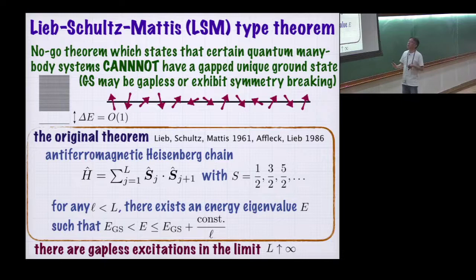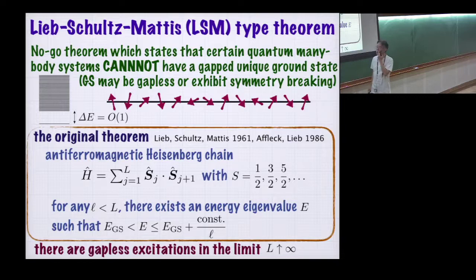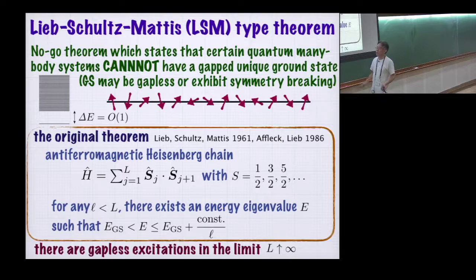The original theorem goes back to 1961, proved by Leibschutz-Matthes. It was about the anti-ferromagnetic Heisenberg chain with spin one-half, one of the most basic quantum many-body systems. It was extended by Affleck and Lieb to other spins. What they say is that for any lowercase l strictly larger than the system size, you can find an energy eigenvalue larger than the ground state energy but very close to it—the difference is a constant divided by l. So if the system size L is large, you have energy eigenstates with very low excitation energy.